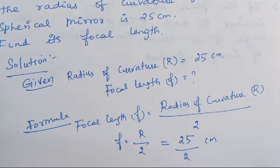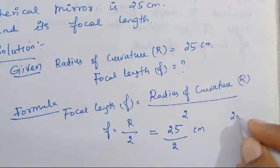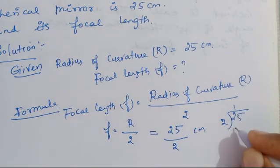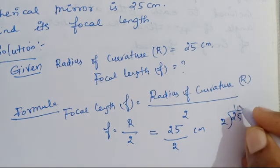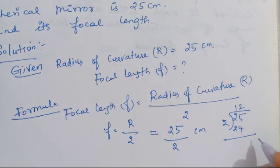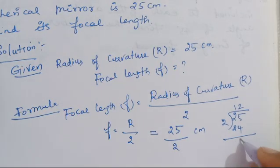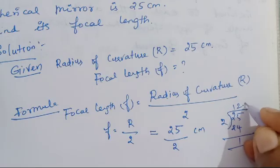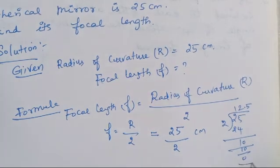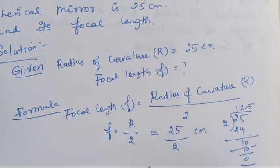So 25 divided by 2. Calculating step by step: 1 times 2 is 2, 2 times 2 is 4, so 24, balance 1. Then the key point, 5 times 2 is 10, so we get 12.5.